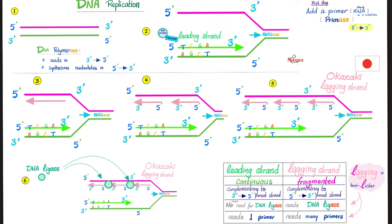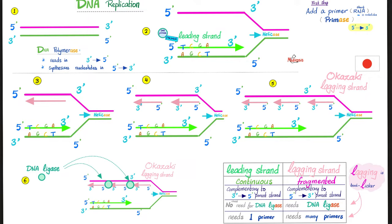We have a problem on the opposite side. As helicase cruises and opens new segments, DNA polymerase can only work 5-prime to 3-prime. So it has to work in fragments: start a segment, helicase opens more, add another segment, and so on. These fragments are called Okazaki fragments, discovered by Japanese scientist Okazaki. DNA ligase then binds and joins these Okazaki fragments together into a continuous strand.